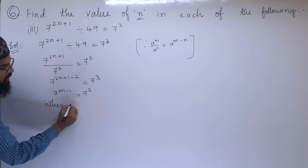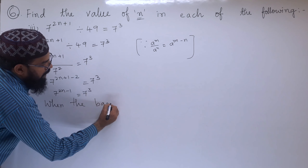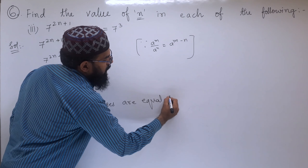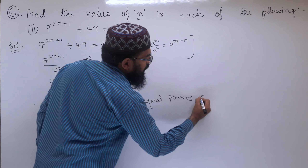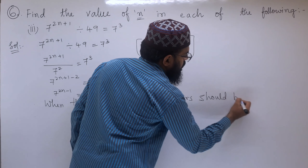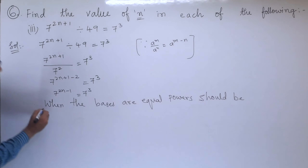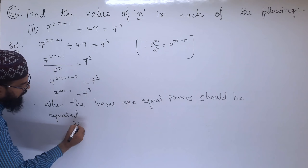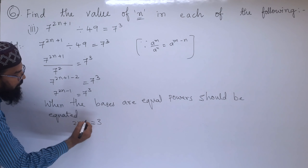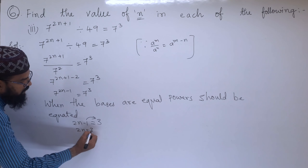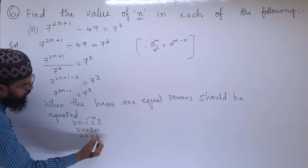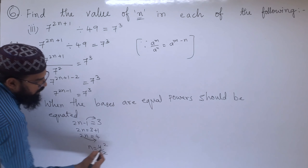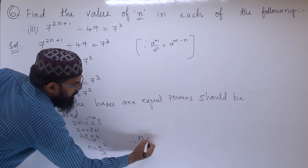When the bases are equal, powers should be equated. So 2n - 1 = 3. The -1 goes to the other side: 2n = 3 + 1 = 4. Dividing both sides by 2, n = 4 ÷ 2. Therefore, the value of n is 2.